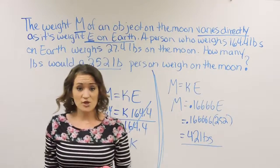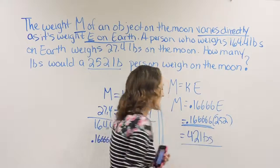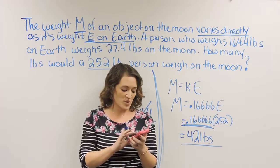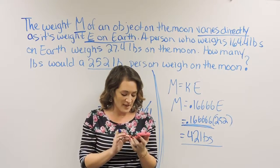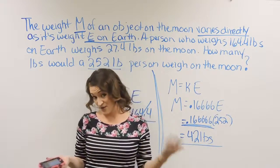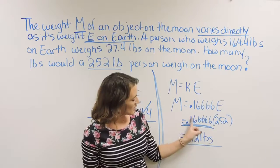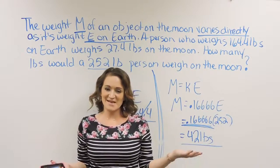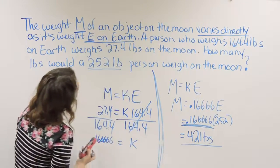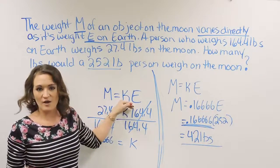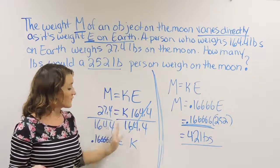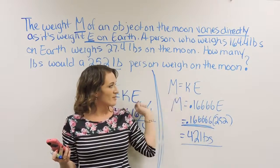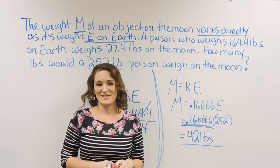If you're curious, you can go ahead and plug in your own weight. Just take the constant of variation, 0.1666666, multiply it by how much you weigh, and you'll know exactly how much you'd weigh on the moon. So again, make sure you're using the correct variation formula first, always solve for K, and then use that K to plug in and solve the other part of the problem.